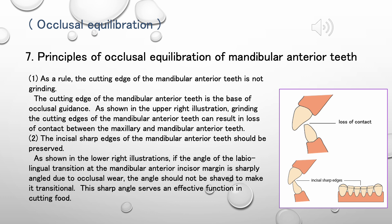As a rule, the cutting edge of the mandibular anterior teeth is not ground. The cutting edge of the mandibular anterior teeth is the base of occlusal guidance. As shown in the upper right illustration, grinding the cutting edges of the mandibular anterior teeth can result in loss of contact between the maxillary and mandibular anterior teeth. The incisal sharp edges of the mandibular anterior teeth should be preserved. As shown in the lower right illustrations, if the angle of the labiolingual transition at the mandibular anterior incisor margin is sharply angled due to occlusal wear, the angle should not be shaved to make it transitional. This sharp angle serves an effective function in cutting food.